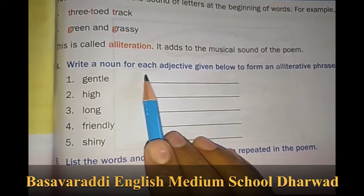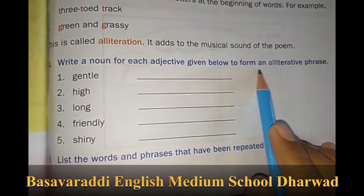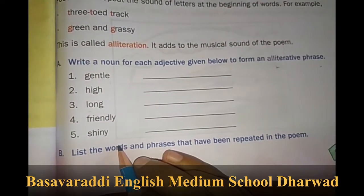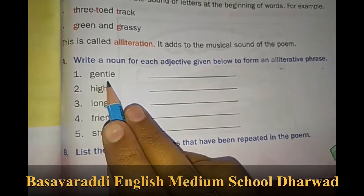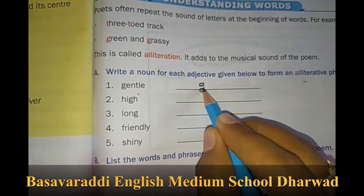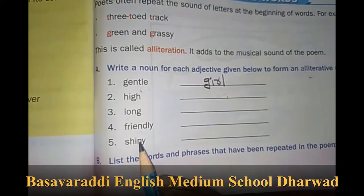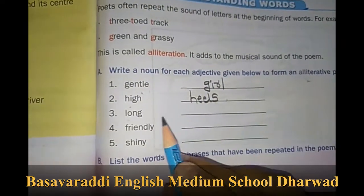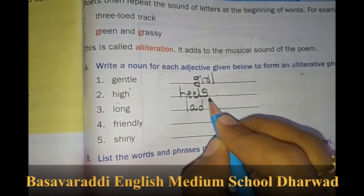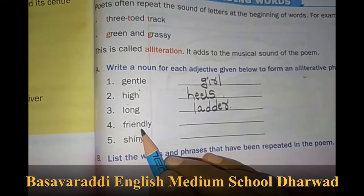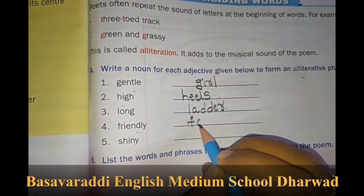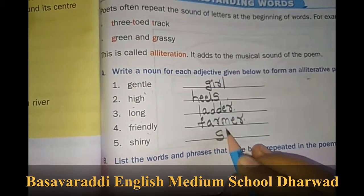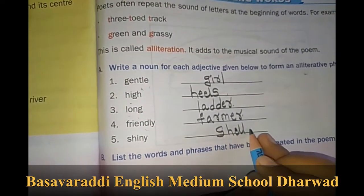Move on to the next one: write a noun for each adjective given below to form an alliterative phrase. So here are the answers — a gentle girl, high heels, long ladder, friendly farmer, shiny shell.